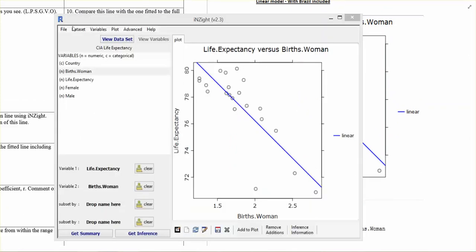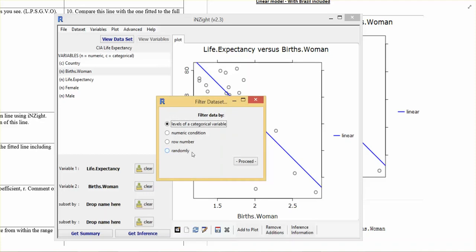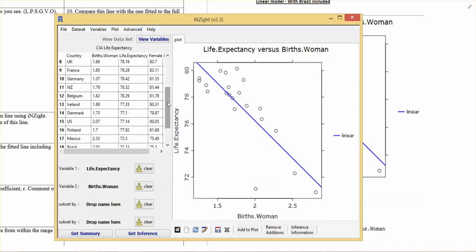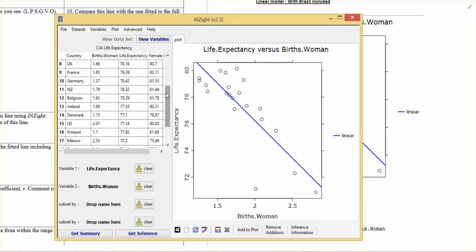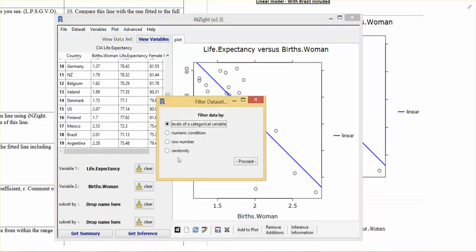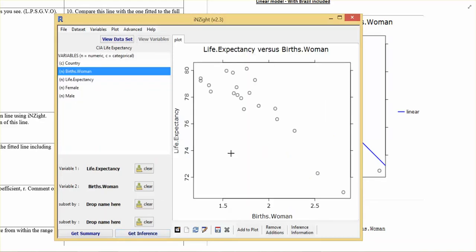Okay so now I'm going to remove Brazil and do the same thing and compare. So back to InZite and I'm going to go data set, filter data set, and I'm going to remove a particular row number. Because I've restored the data set everything's back to its old position so I just need to find Brazil. And there it is and it's row number 18. So I want to remove row 18. And it says type in the row names of observations that need to be excluded. So I'm excluding Brazil and see Brazil's gone.